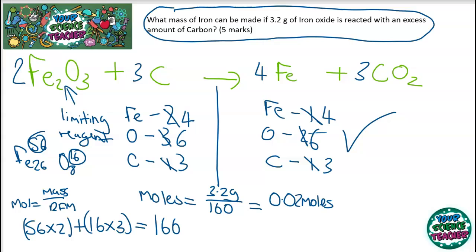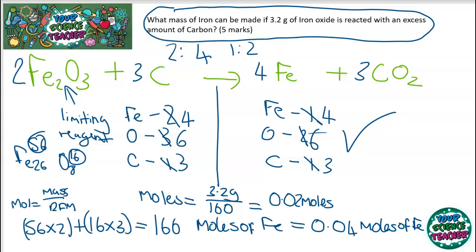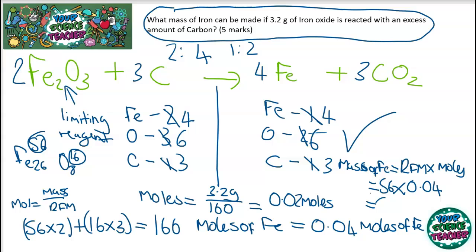To find the amount of iron I will make, I go back to the balanced equation and look at the ratio of iron oxide to iron — it's 2 to 4, simplified to 1 to 2. So I'm making double the amount of iron. The moles of iron I can theoretically make will be 0.04 moles. To calculate the mass of iron I can theoretically make, I rearrange the mole equation: mass equals RFM times moles. The RFM of iron is 56, so 56 times 0.04 gives an answer of 2.24 grams.